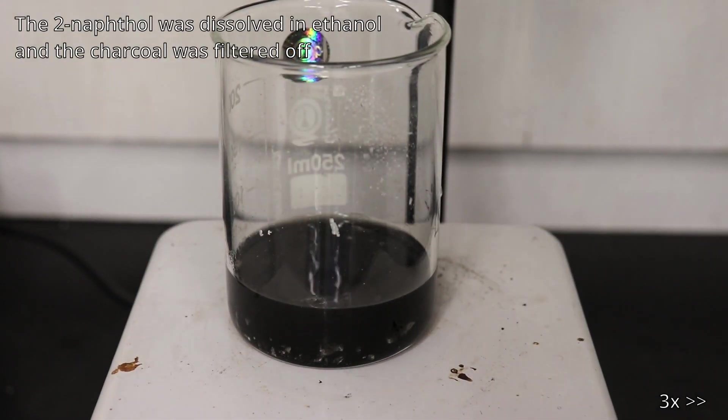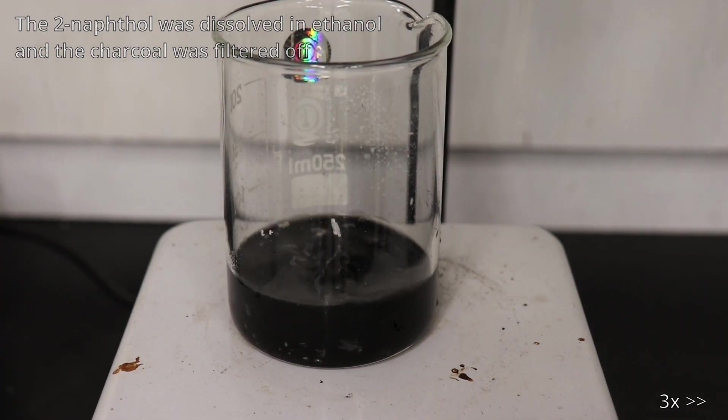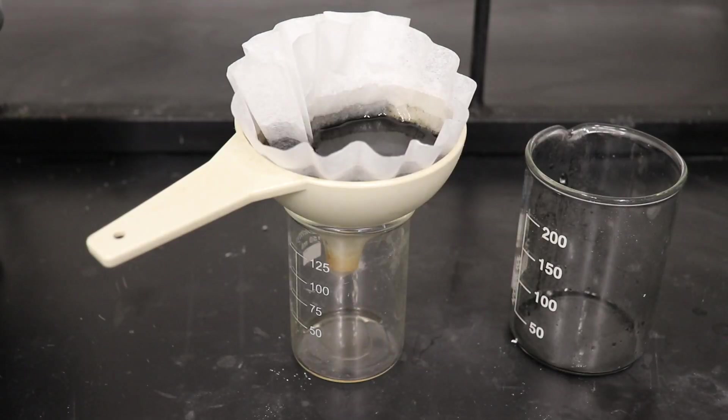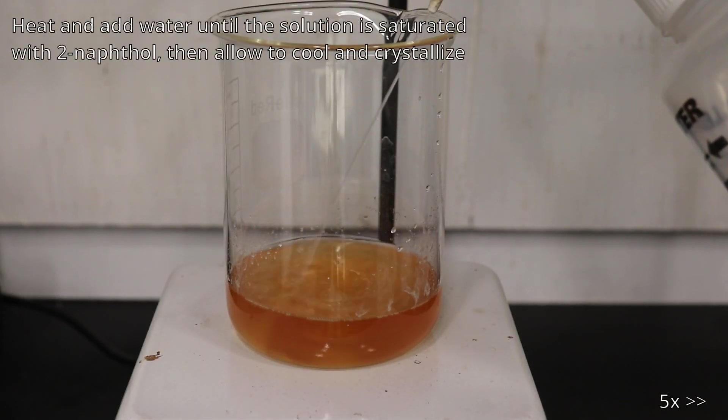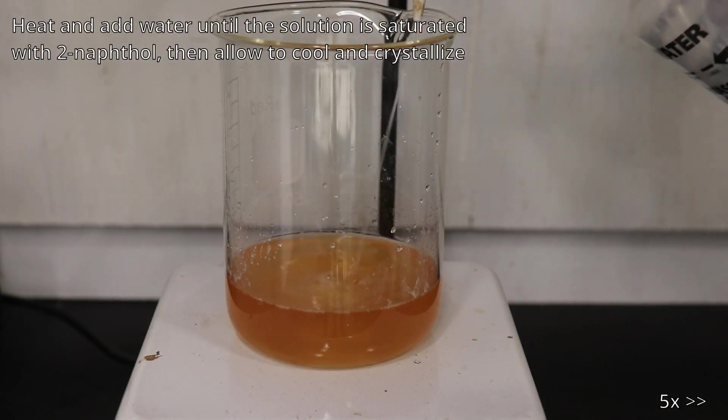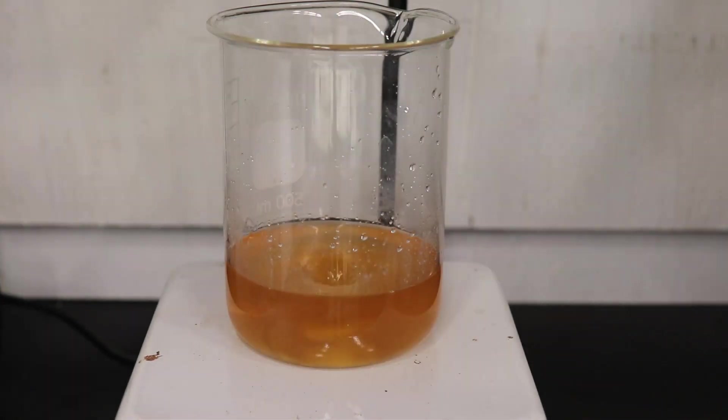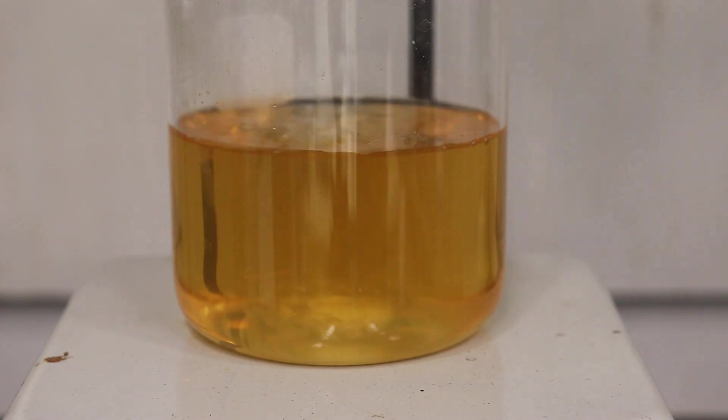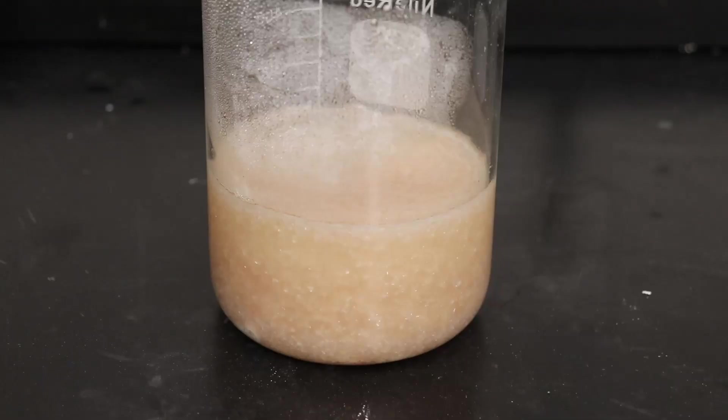To do this, I first dissolved all the 2-naphthol residue with ethanol, filtered off all the charcoal, and then heated up the ethanol and naphthol solution. Then I added water to the boiling ethanol to decrease the solubility of the 2-naphthol, causing it to precipitate out. I adjusted the amount of ethanol and water ratio so that it was at saturation while boiling, then I removed it from the heat, allowing it to cool and crystallize out.